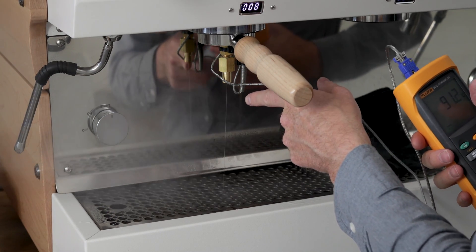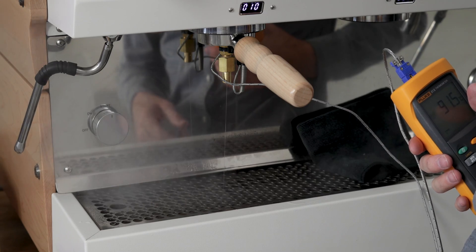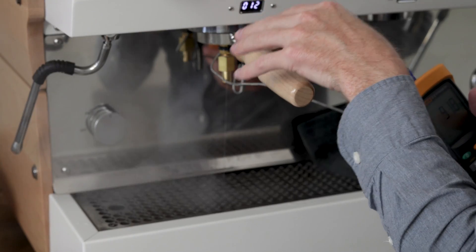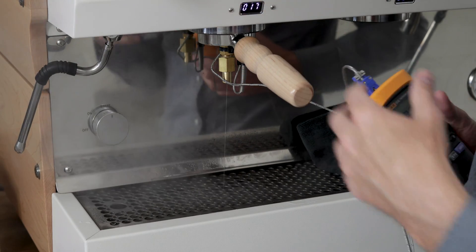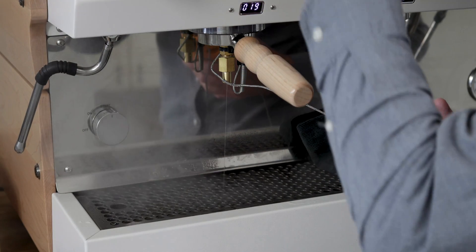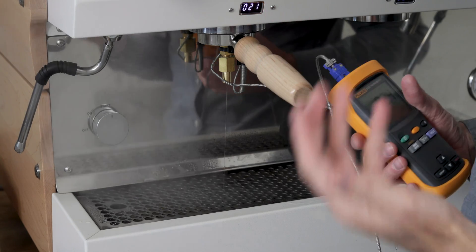That flow restrictor keeps a really low flow coming out of there so that there is a good amount of water. It's still accepting new water, but not a lot on top of that temperature probe, so it's getting a really accurate reading of the water coming out of the dispersion screen, which is going to be your brew water.